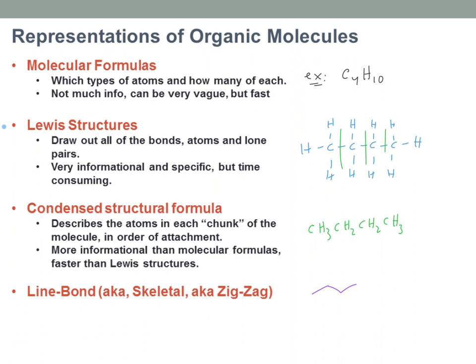What you'll notice with line bond drawings is that every end and every bend is a carbon atom. So all of these bends and ends are carbon atoms. The other rule is that you do not draw CH bonds anymore — there are so many hydrogen-carbon bonds in organic molecules, they're loaded everywhere.